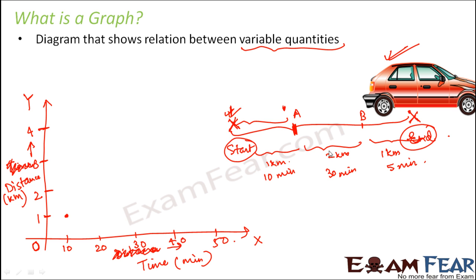After that, it traveled 2 more kilometers. So basically, how much total distance it had traveled by the time it reached B, it has traveled 2 plus 1. That is 3 kilometers. Total 3 kilometers it traveled in how much time? In a total time of 40 minutes, right? Because here, we are actually measuring these values from 0, correct?